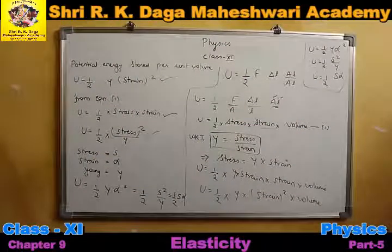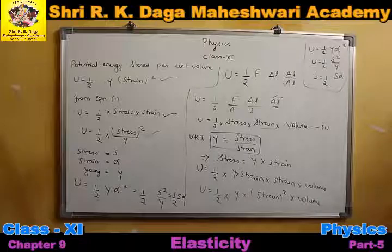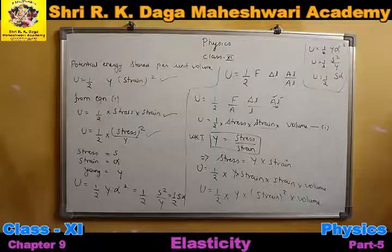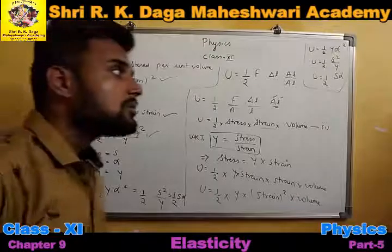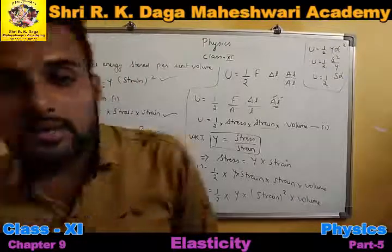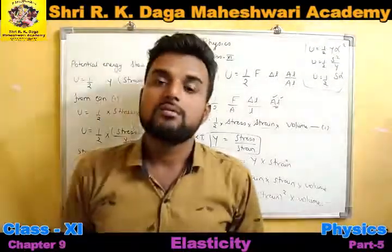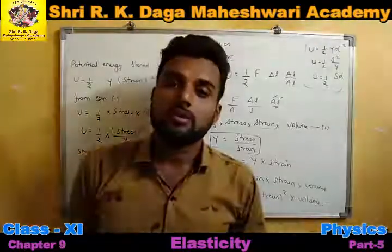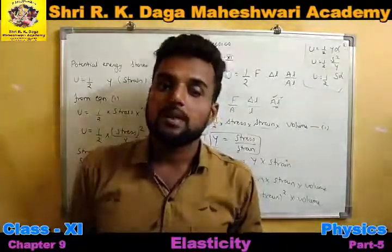These are the three formulas for the potential energy in a wire on which we have suspended some mass. With the help of these three expressions, you can solve the numericals. That's all for today's class students; the further topics we are going to study in the next lecture. Thank you.